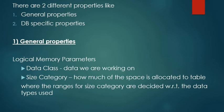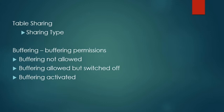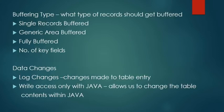Next is the table sharing which uses sharing type, and the next one is buffering which defines buffering permission—that is, should the table be buffered or not. This also has three different types: buffering not allowed, buffering allowed but switched off, and buffering activated. We are going to see this in detail.